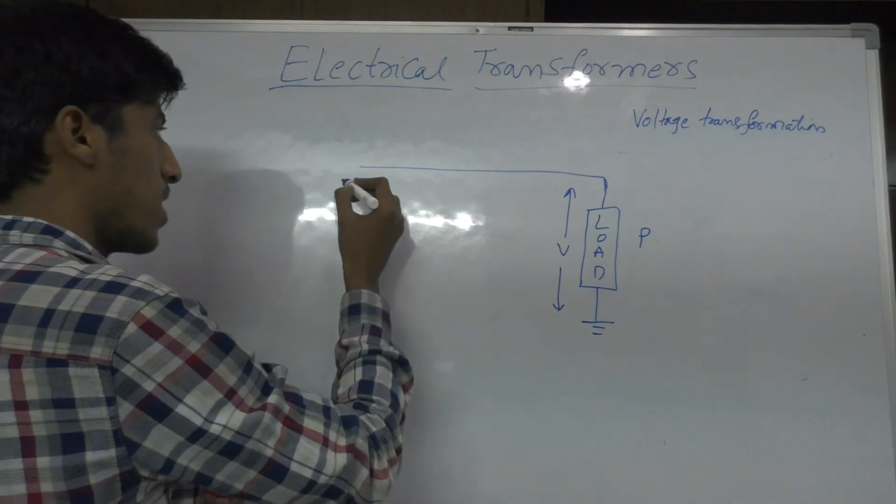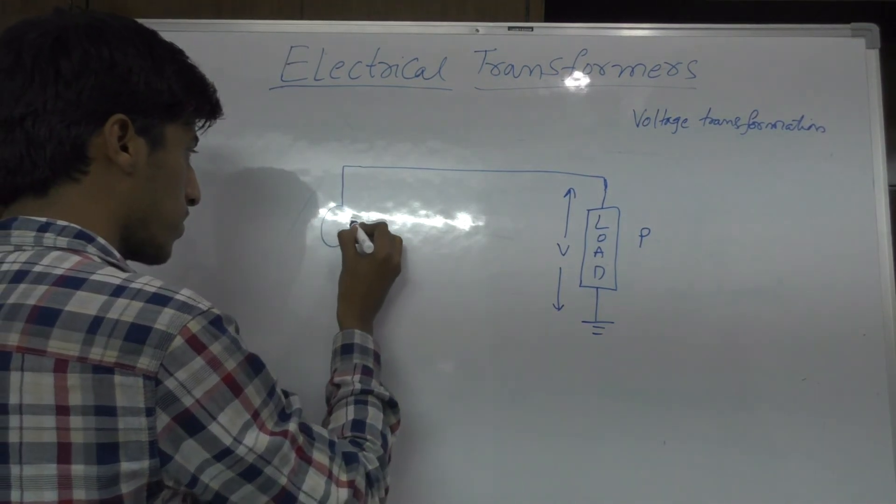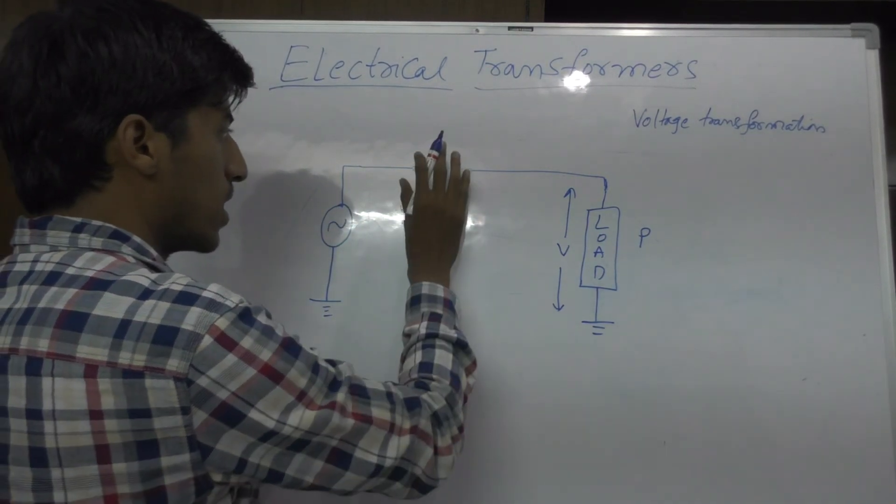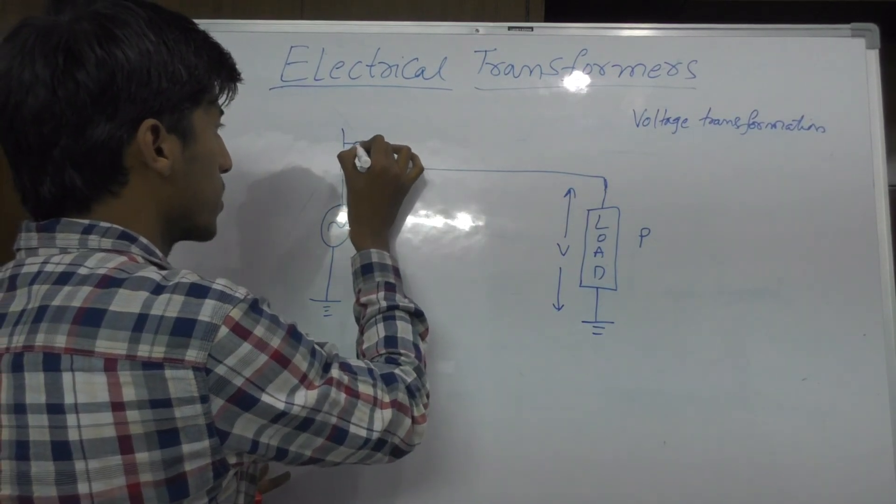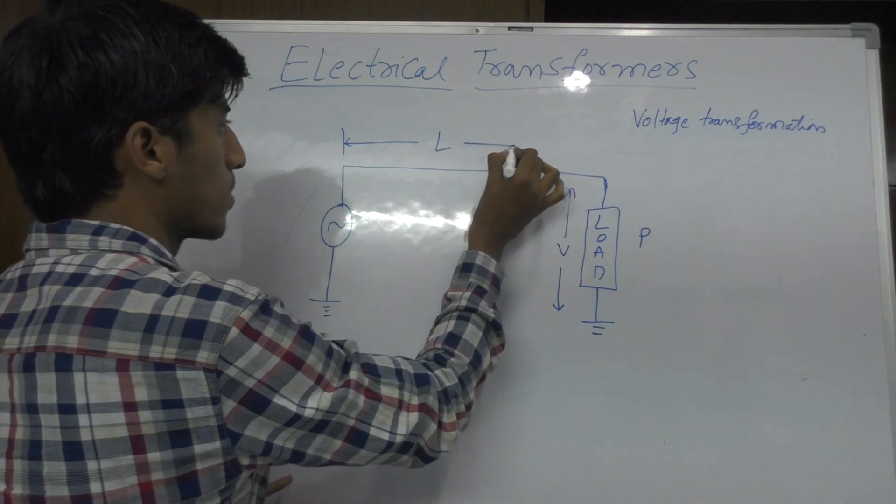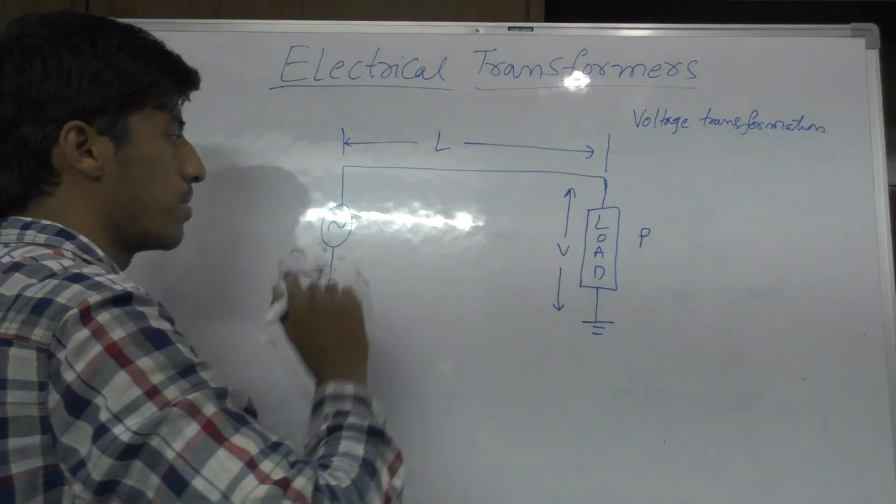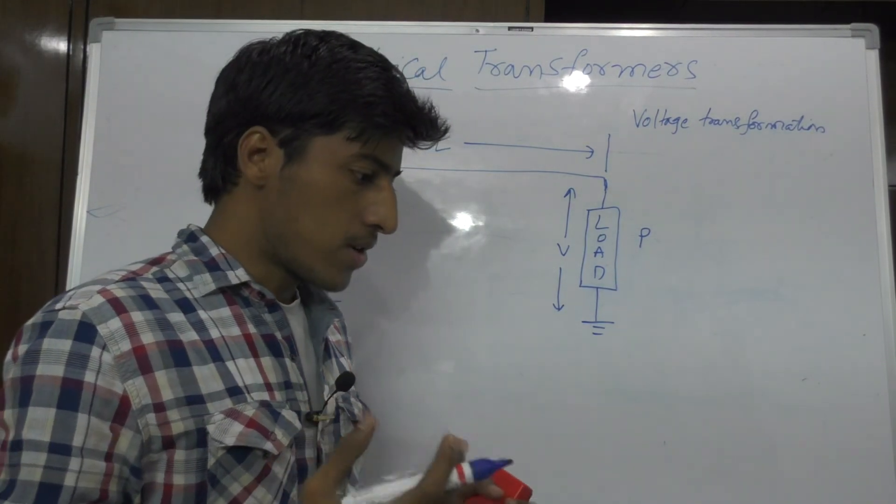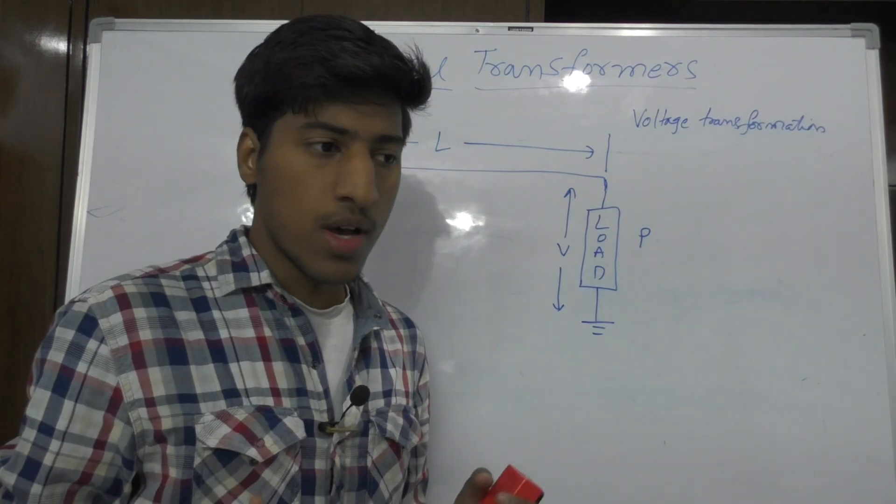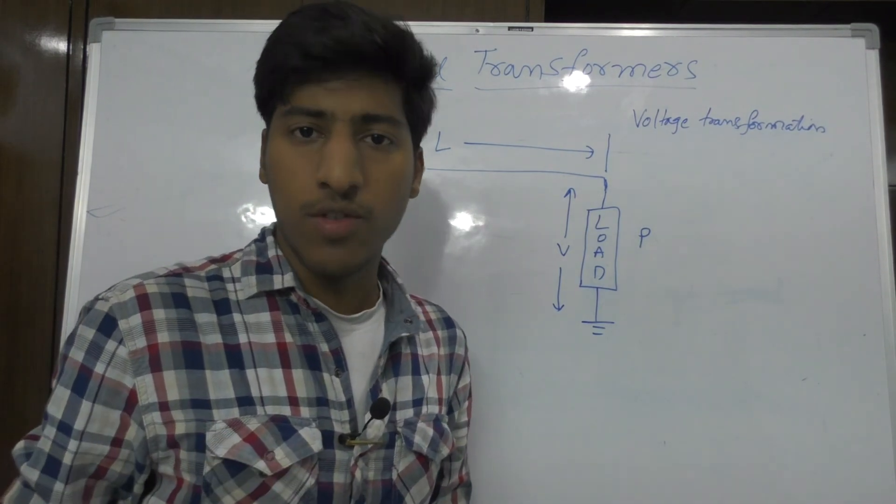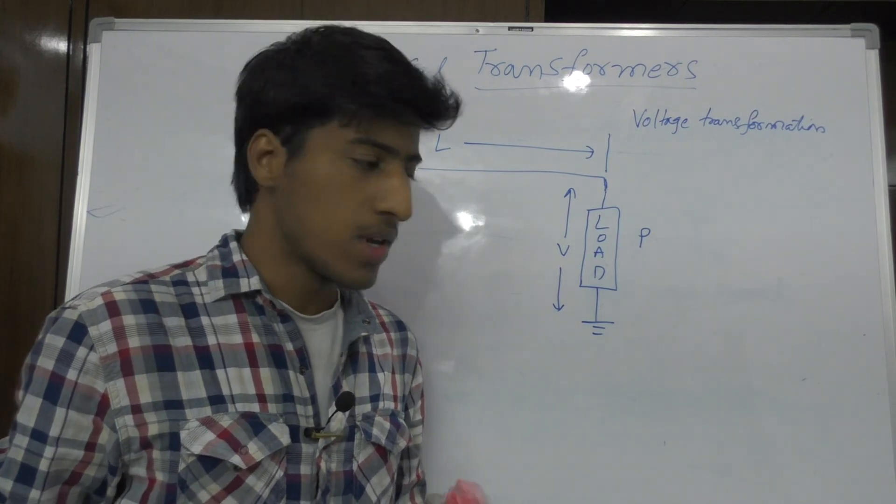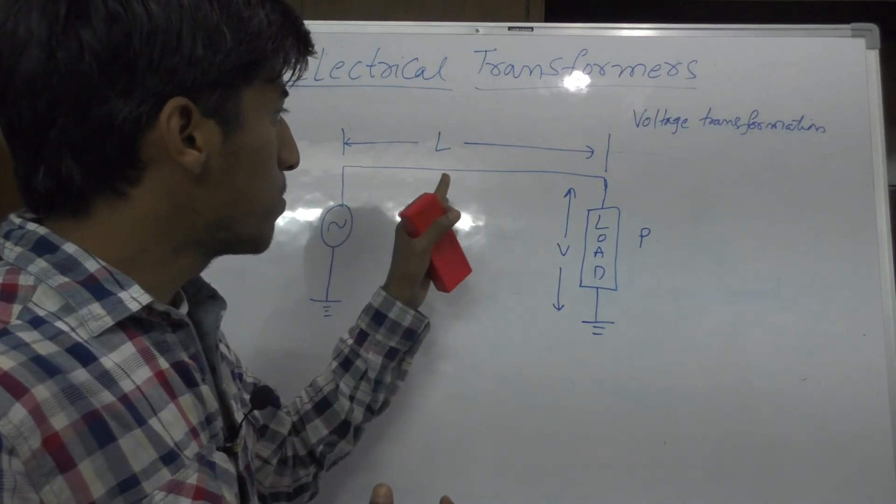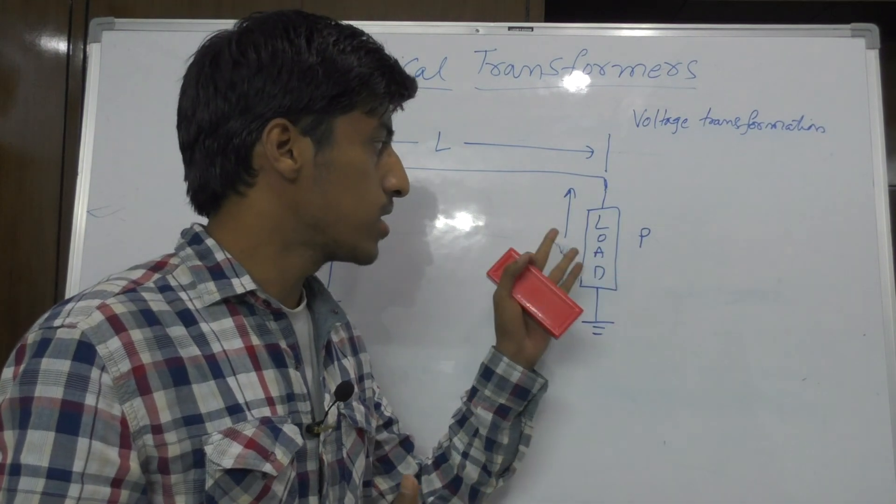This is the transmission line and here is our source. The length of this transmission line is L meters. The conductor length is L meters and this is our source. Source is nothing but a power station. Generally in power stations, most will have electromechanical energy conversion devices, that is nothing but a generator. Generator produces electricity and here the electricity is transmitted through transmission lines and it reaches finally to the load.